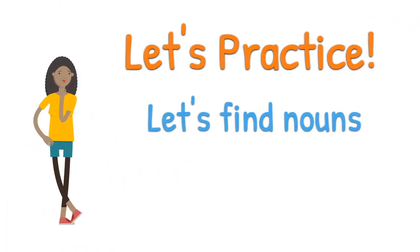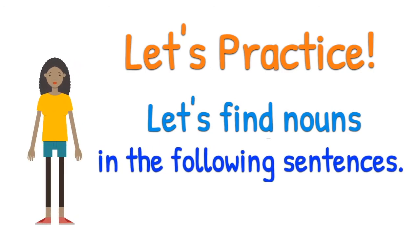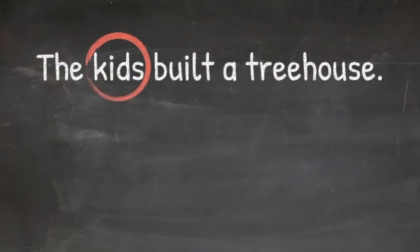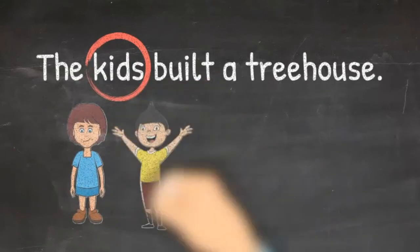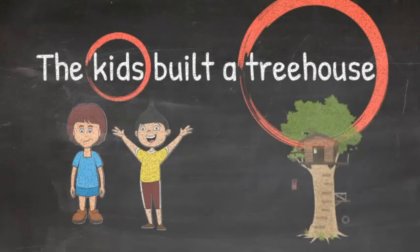Let's practice. Let's find nouns in the following sentences. I can go first. The kids built a treehouse. Kids is a noun which are the people. Also a treehouse is a noun which is the place.